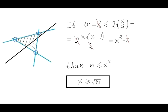We need to prove that x is not less than the square root of n. If we can prove that the number of non-blue lines is not greater than 2 times the number of blue points, then, after a couple of simple algebraic steps, we can prove that x is not less than the square root of n.